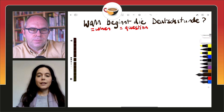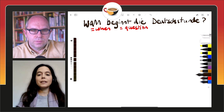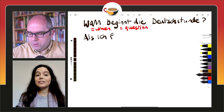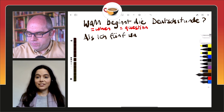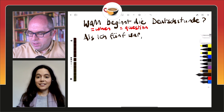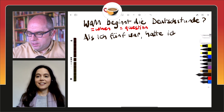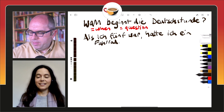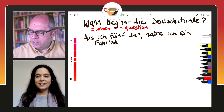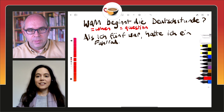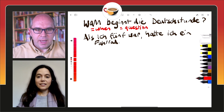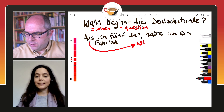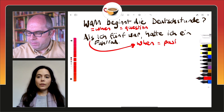What about als? Als is used for something happening in the past. For example, als ich fünf war, hatte ich ein Fahrrad — when I was five, I had a bicycle. So it's still translating as 'when' in English, but it's a different type of when. You're looking back to the past. We use als when we speak about something happening in the past.